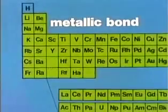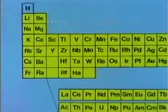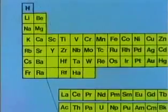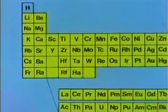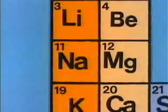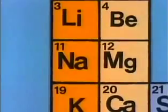This type of bond, like all bonds, is based on electronic structure. We can consider the structure of the metal — sodium for instance — as a typical case. A sodium atom is electrically neutral. In its outermost energy level, it has one electron.